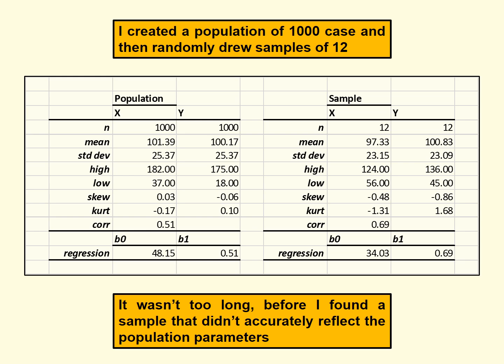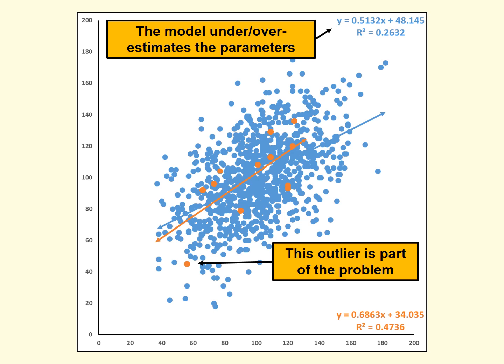You can see in this one particular sample the means are a little bit different, especially on variable x. The correlation is different — variables x and y are more highly correlated in the sample than they really should be, given how they are in the whole population. If you want to visualize what this looks like, I made a scatter plot. The blue dots are all thousand data points in the population, and the orangey-yellow dots are the 12 cases that I pulled out. There's a blue line reflecting the simple regression of y on x in the population, and an orangey-yellow line for that same model based on our sample — you can see fairly easily how those regression coefficients in the sample are a little bit off.